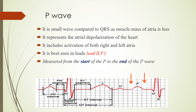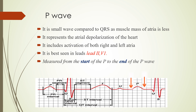The best leads to see the P waves are limb lead 2 and chest lead V1. However, you need to look at all the leads. To measure the P wave, as shown by the arrows, it is measured from the onset of the P wave to the end of the P wave.